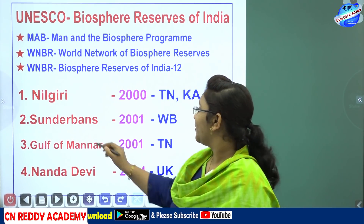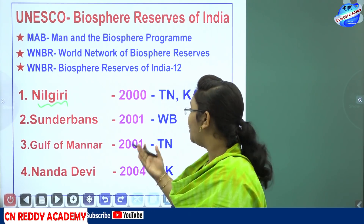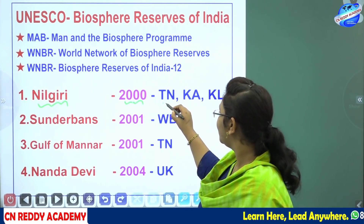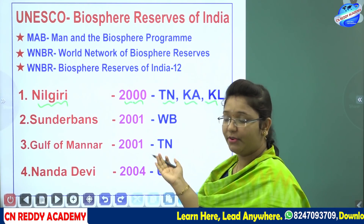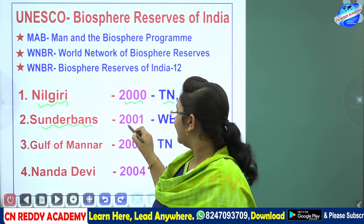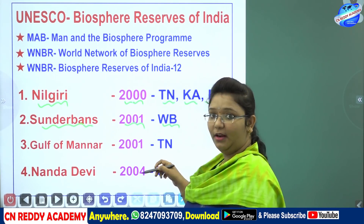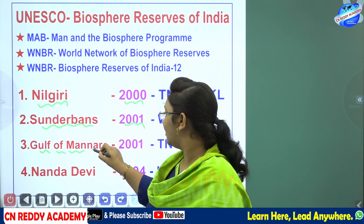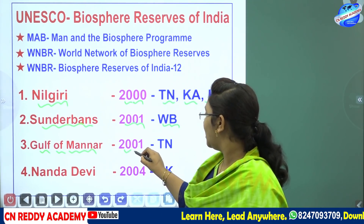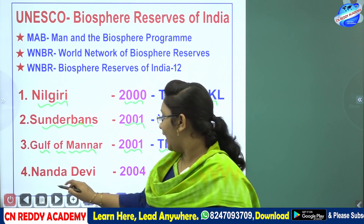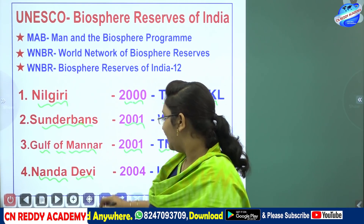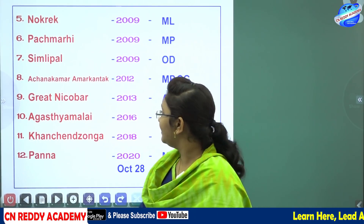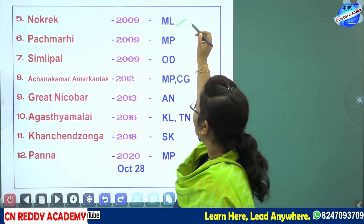The first UNESCO-recognized biosphere reserve is Nilagiri, recognized in the year 2000, located in Tamil Nadu, Karnataka, and Kerala. Next is Sundarbans, recognized in 2001, in West Bengal. Then Gulf of Mannar, also in 2001, in Tamil Nadu. Next is Nanda Devi, recognized in 2004, in Uttarakhand.